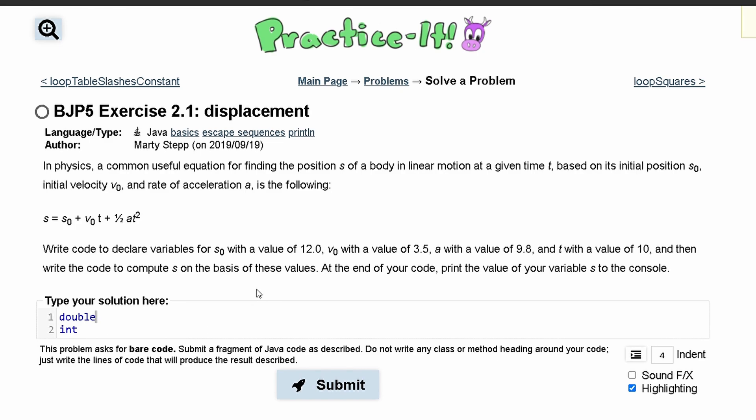We have just one int. Our first double is s0, or s0 here, and that's going to be equal to 12.0. Next we have v0, and that's going to be equal to 3.5, and then we have a, which is equal to 9.8.